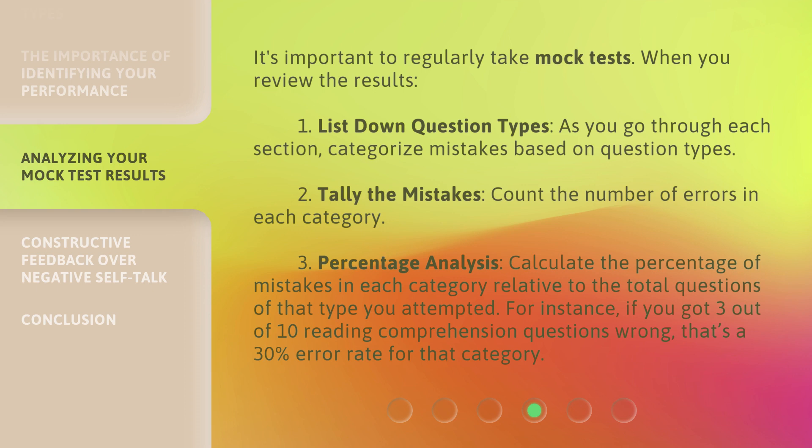For instance, if you got 3 out of 10 reading comprehension questions wrong, that's a 30% error rate for that category.